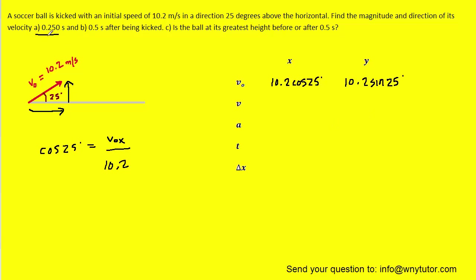Part A of the question is asking about a time of 0.25 seconds, so we can fill that in for both the x and y directions. The acceleration in the x direction is 0 meters per second squared, and in the y direction it is negative 9.8 meters per second squared. The question is asking for the final velocity, so we put question marks for both x and y and make it our goal to find those.